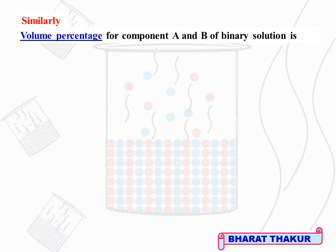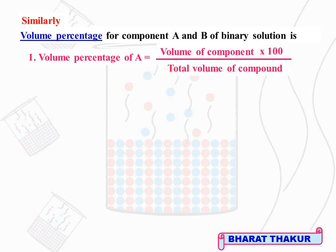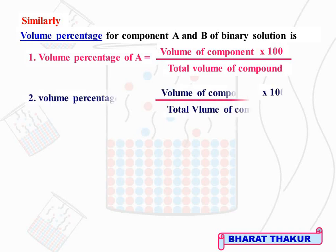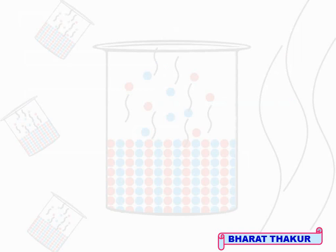Similarly, volume percentage of component A equals volume of that component multiplied by 100 divided by total volume of the solution. Volume percentage of component B (solute) equals volume of that component multiplied by 100 divided by total volume of solution. Volume percentage also has no unit.